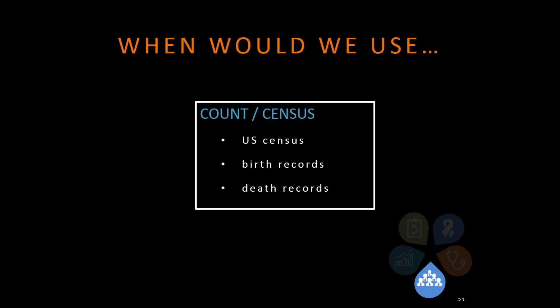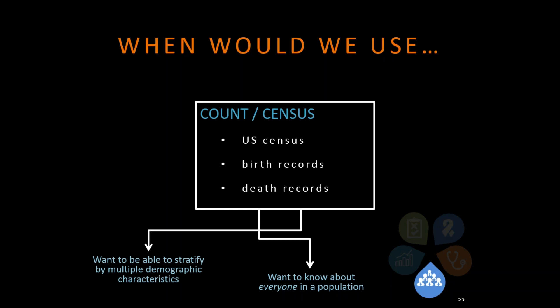Count or census data. As a recap, this is a type of data that includes every single person in the population. A registry includes everyone with a certain condition like cancer or an injury. Census data is literally all the people — the US census, every ten years, counts all the folks in the country and provides detailed demographic information. Similarly, birth records: if you were born in Massachusetts, there's a birth certificate for you — that's literally everyone. And if you die in Massachusetts, a death record exists. That's really useful when you want to know about every single person in the population, such as birth weights or how many people in the death record died of a certain condition.